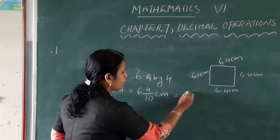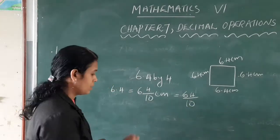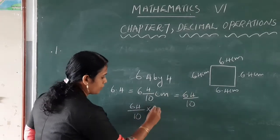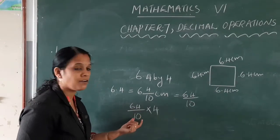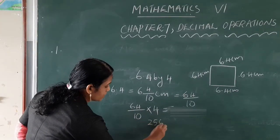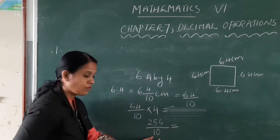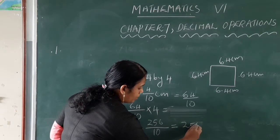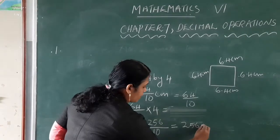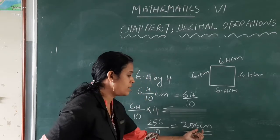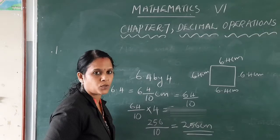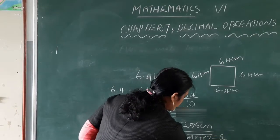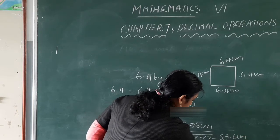So, 64 divided by 10 into 4 sides equals 64 by 10 taken 4 times, which gives 256 divided by 10. One number before the end we have to put a decimal, so the answer is 25.6 centimetres. Therefore the perimeter is equal to 25.6 centimetres.